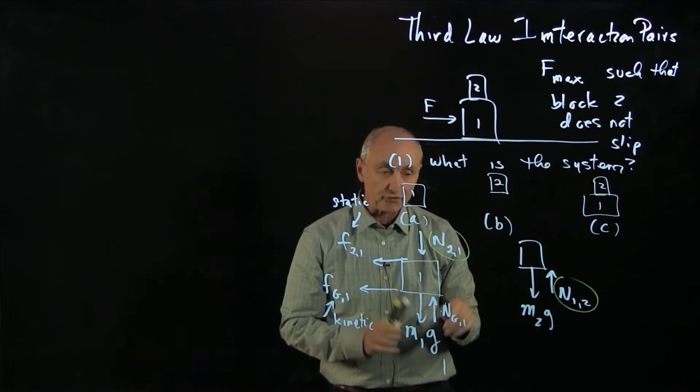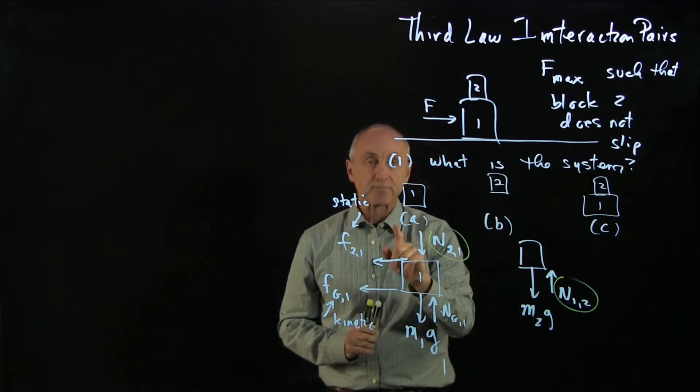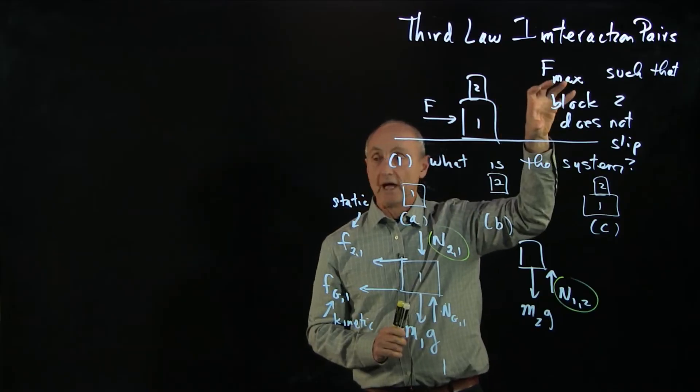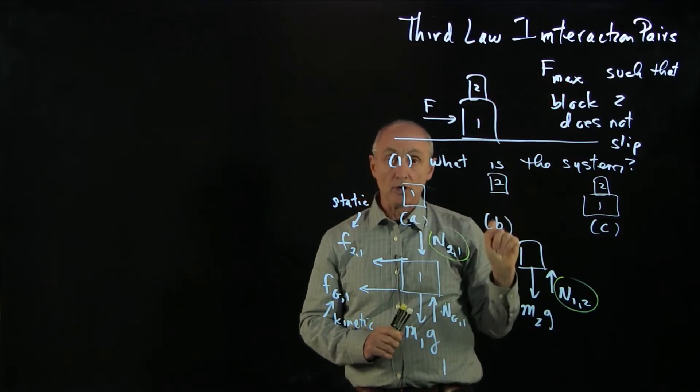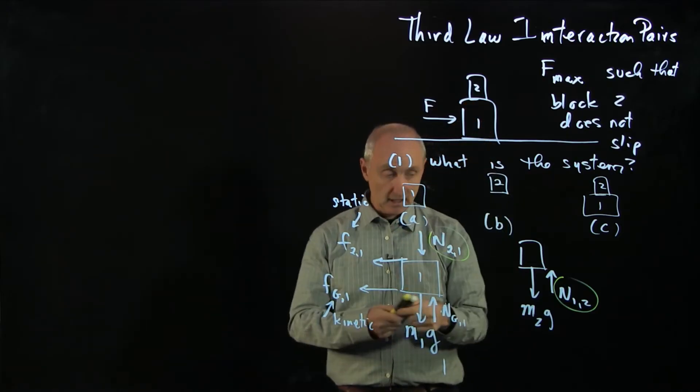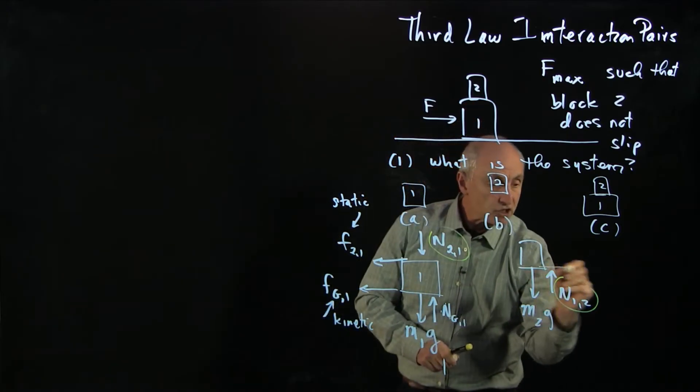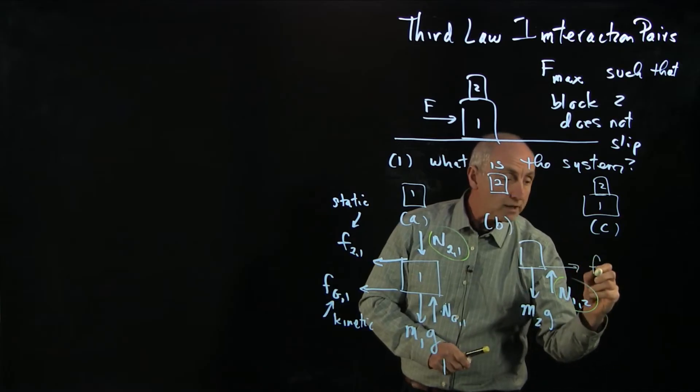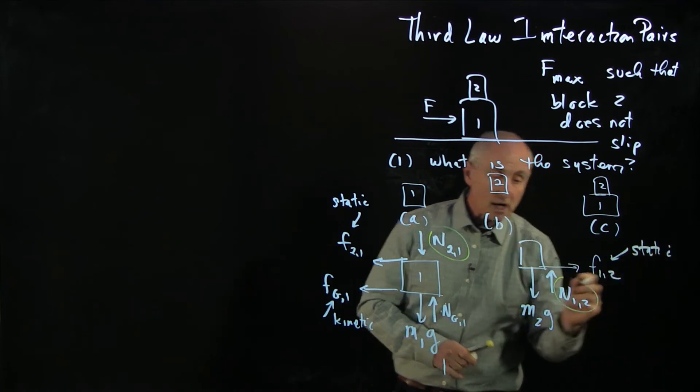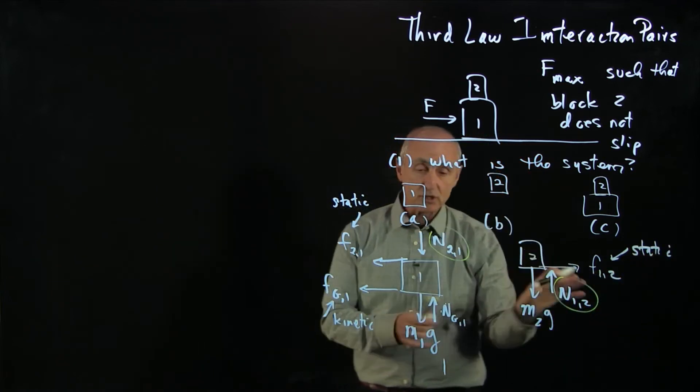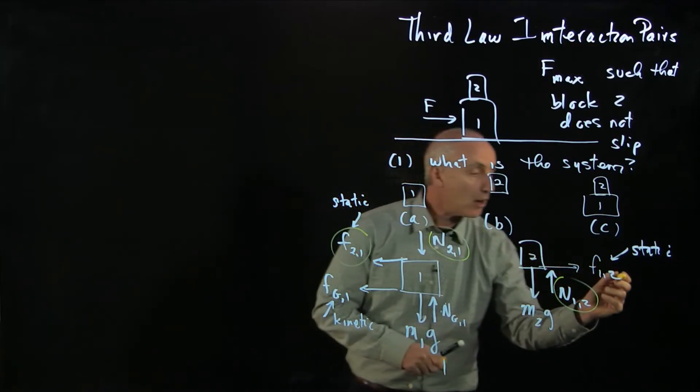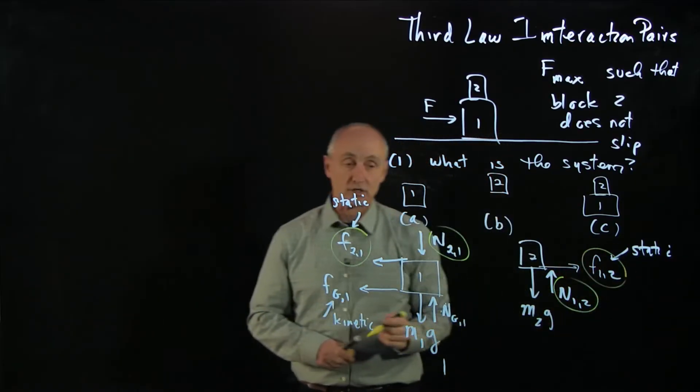Now, what else? Here's the subtle thing. This whole system will move to the right. What's the force that's making block two move to the right? Well, it's static friction. So static friction from block one on block two is causing block two to move to the right. And now we can see, again, our third law interaction pair.